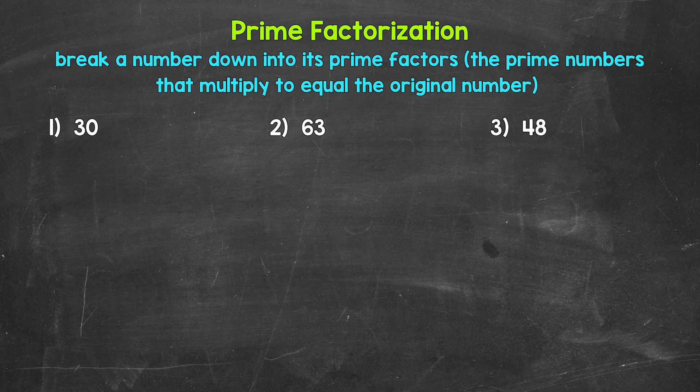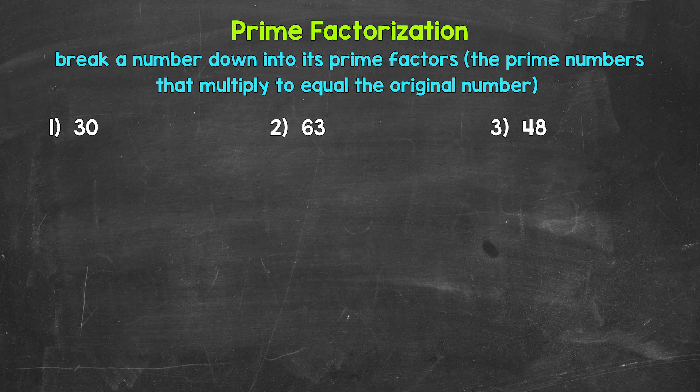When it comes to the prime factorization of a number, we break the number down into its prime factors. These are the prime numbers that multiply to equal the original number. So we are decomposing a number, breaking a number down to only prime numbers. And remember, prime numbers only have two factors: one and the number itself.